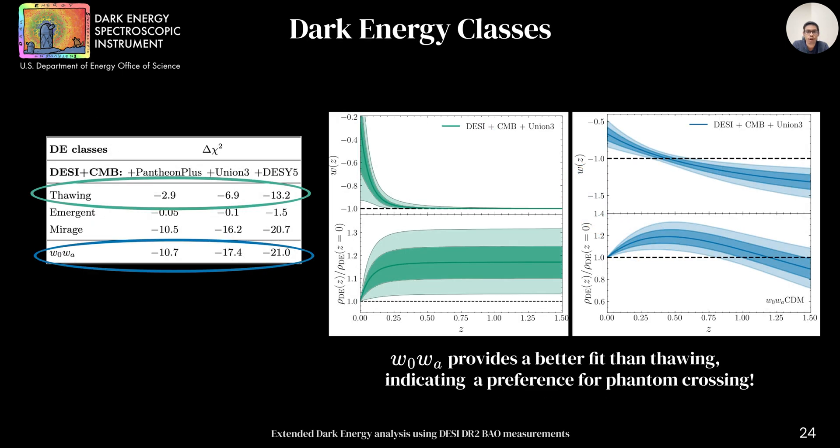Finally, we perform a model comparison and find that w0wa provides a better fit than thawing quintessence indicating data's preference for rise followed by decrease in the dark energy density.